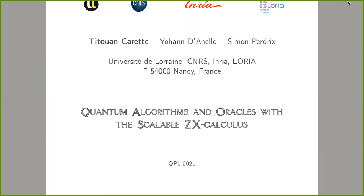The main point of this work is that last year we developed a scalable notation for ZX calculus, and the goal was to be able to represent an algorithm with a single diagram — to present a uniform family of diagrams showing what diagrams we have for each input size n. We developed this formalism but never really tried it on the usual quantum algorithms you find in any quantum computing 101 class. So this is what we tried to do in this paper. I will present three algorithms: first Bernstein-Vazirani, then Deutsch-Jozsa, and finally Simon's algorithm.